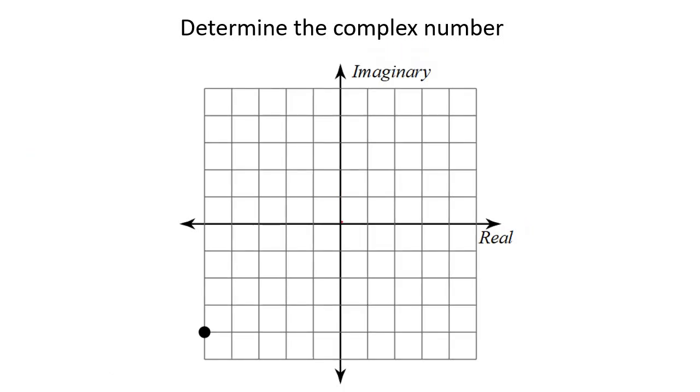Here's the next one. The real part would be one, two, three, four, five to the left. So that's negative five because it went left. And then we're going to go one, two, three, four down. So that's going to be negative four, but then you must say i to show that it is imaginary.